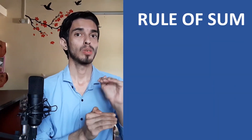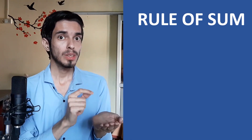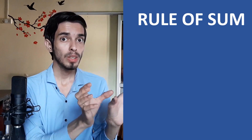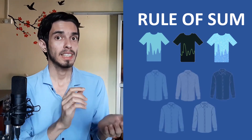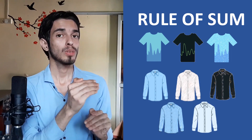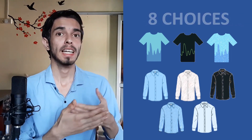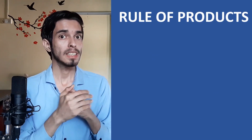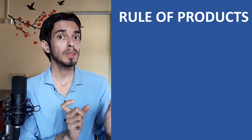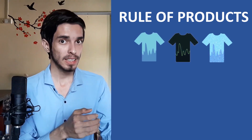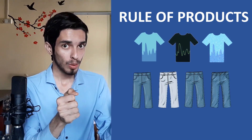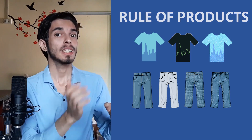Being able to identify which rule to use is really important, and most of us make mistakes here. The rule of sum is used when we need to know the options when we have two separate, different choices. For example, if you have three different short-sleeved shirts and five different long-sleeved shirts, the number of choices you have is five plus three, which is eight. The rule of product is used when you have A ways to do one thing and B ways to do another part of the same whole task. For example, with three different shirts and four different pants, the number of ways to wear them is four times three, which is 12.